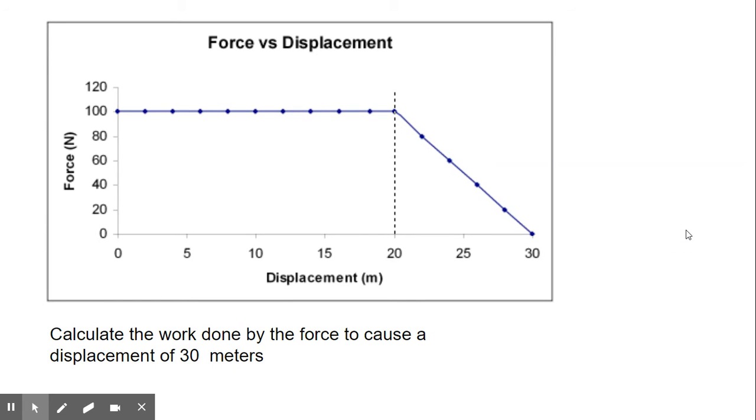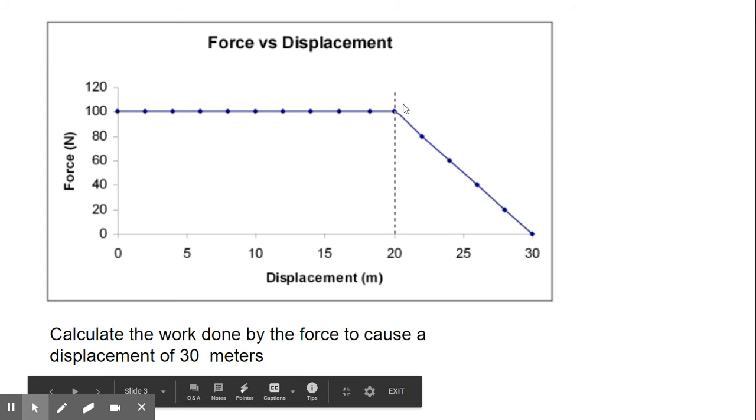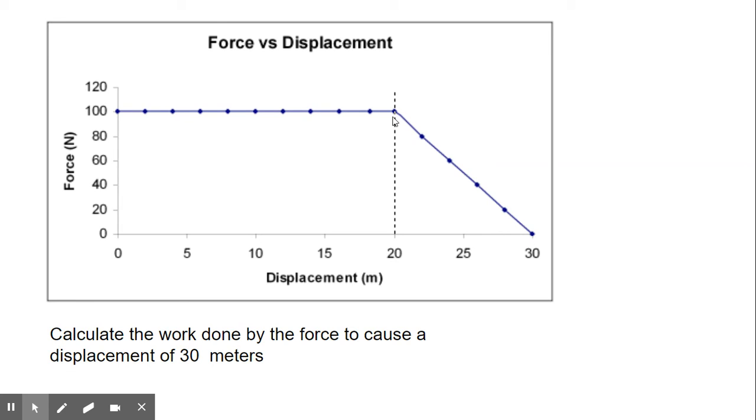Now let's look at another problem. This is the same graph. This time, the problem says calculate the work done by the force to cause a displacement of 30 meters. So if you look here from 0 to 30, you have an irregularly shaped object. So we're going to divide it into two areas.